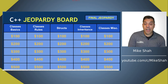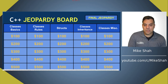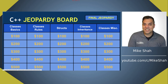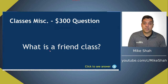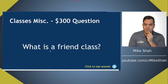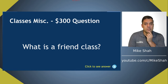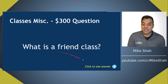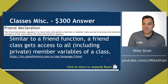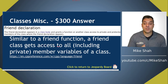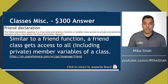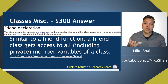For 300: what is a friend class? Similar to friend functions, a friend class when declared gets access to all — including the private member variables — of a class. We're essentially saying it's a trusted friend class, so we give it access to all the internal data.